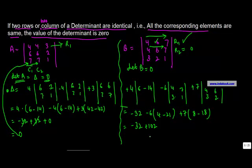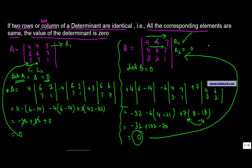Adding the three terms: −32 + 102 − 70 = 0. Hence the property is verified: if two rows are the same — row 1 equals row 2 — then the value of the determinant is zero.